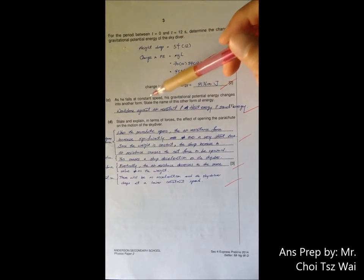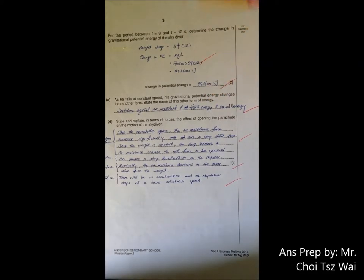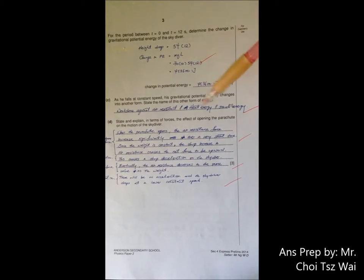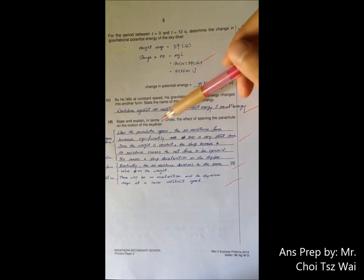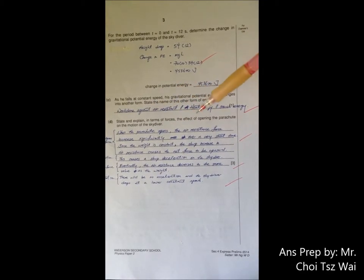Then after that, you are asked to name how the energy is dissipated. Some of the GPE is converted into heat energy, is converted to sound energy, or the work done against the air resistance. Now, in part D, this is what I'm trying to say at the beginning of the paper. You need to be very precise, very accurate with your language, and you need to take note what the question is asking from you.